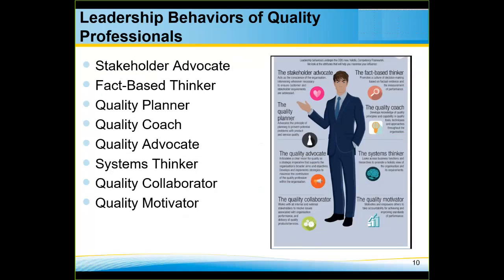Continuing the eight behaviors: quality advocate — having a clear vision for quality in the organization. Systems thinker — looking across the entire organization, promoting a holistic big-picture view of quality requirements. Quality collaborator — working across the entire supply chain, from suppliers to customers, to resolve issues for delivery of quality products and services. And lastly, quality motivator — motivating and empowering others to take accountability for achieving standards of performance. I don't think any of us would disagree with those as key behaviors of a quality professional.